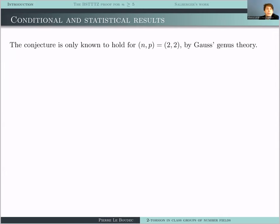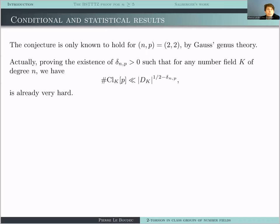There is one case for which the conjecture is known. By Gauss genus theory, it's not hard to prove that in the case N=2, P=2 — so you're looking at two-torsion of quadratic fields — you can bound the two-torsion subgroup of quadratic fields by roughly the divisor function of the discriminant, so in particular it's smaller than any power of the discriminant. That's the only case when the conjecture is known. Even proving that there is some saving — some Delta positive such that for any number field K the P-torsion subgroup is less than some power of the discriminant less than one-half — is very hard.